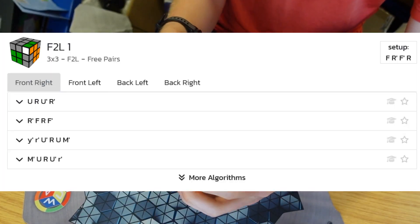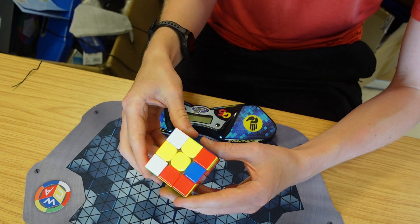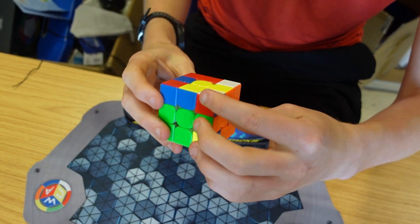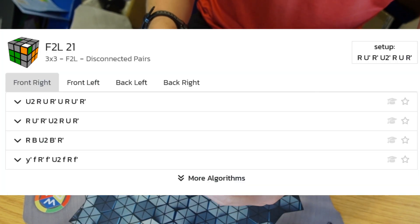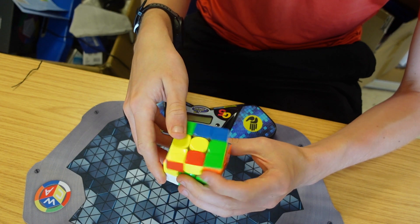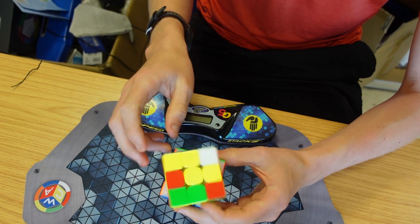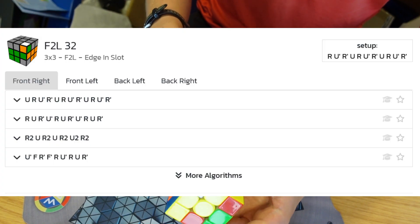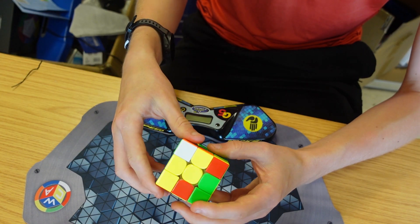Now we've got what's called a free pair which is very easy to insert. Then we're going to insert this red blue edge with this red blue white corner. We do an F2L algorithm to pair it up and insert it in. Then we can do the same thing at the back with this white green orange corner and this white green edge.